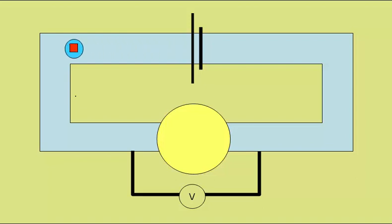The charge passes around the circuit carrying its energy. Here the voltmeter notes how much energy the charge has. In this case, one joule of energy for every coulomb of charge.